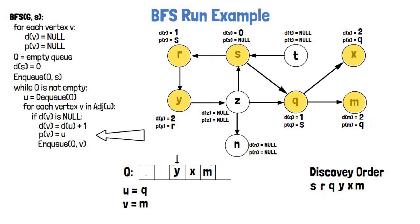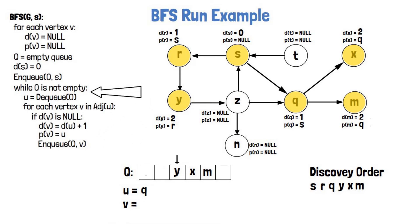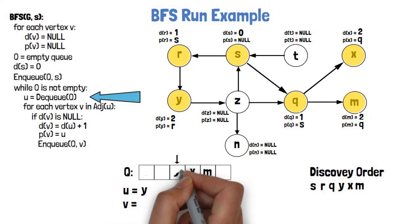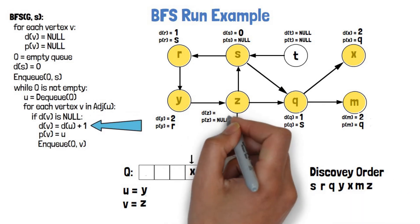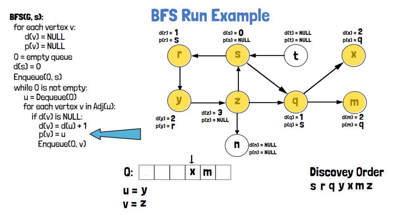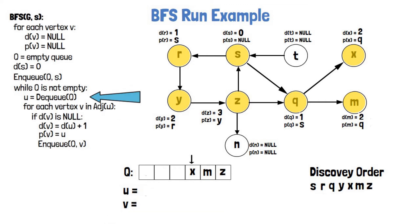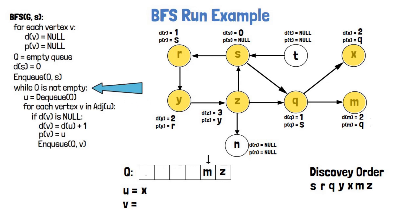We go back to the while condition and dequeue Y. Y has only one neighbor, Z, so we discover Z. Z's distance from S is 3, because Y is at distance 2, and Y is also its parent. We've handled Y and move on to dequeue X. X has no neighbors, so we don't enter its for loop at all and go back to the while condition.